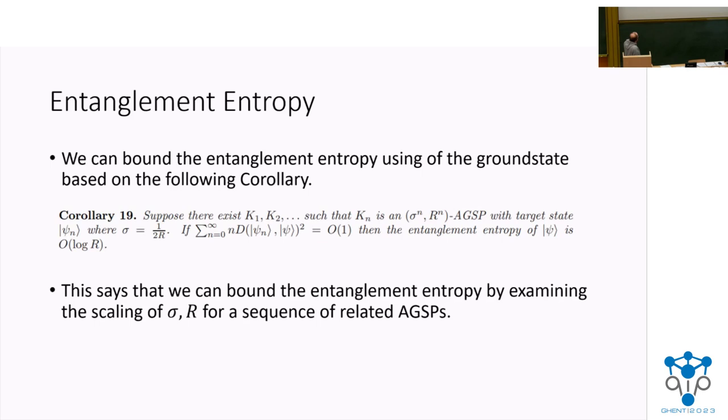But in any case, what we can, we do after that is we prove this result, showing that if we have a sequence of approximate ground state projectors with values sigma and R, where R is the Schmitt rank that we end up seeing for our AGSP, if we have a sequence of these that ends up obeying this relationship here, then we end up getting that the entanglement entropy ends up scaling like the log of the Schmitt rank where R is assumed here to increase at most exponentially with the index of these over here. So what we want to do is we want to now be able to prove things about these, such sequences of approximate ground state projectors. And basically what we end up doing is through some robustness bounds, we can bound the gap of the truncated Hamiltonian in terms of the gap of the original one.